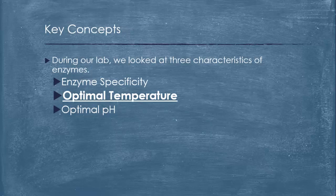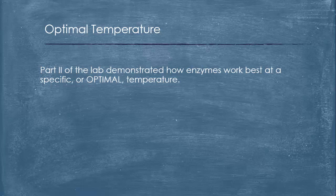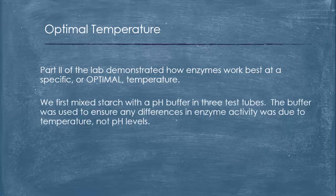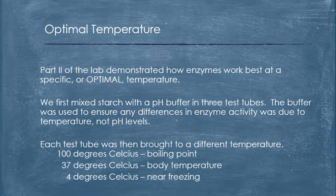The next key concept was the optimal temperature of enzymes. Part two of the lab demonstrated how enzymes work best at a specific or optimal temperature. We first mixed starch with the pH buffer in three test tubes. The buffer was used to ensure any differences in enzyme activity was due to temperature, not pH levels. Each test tube was then brought to a different temperature.